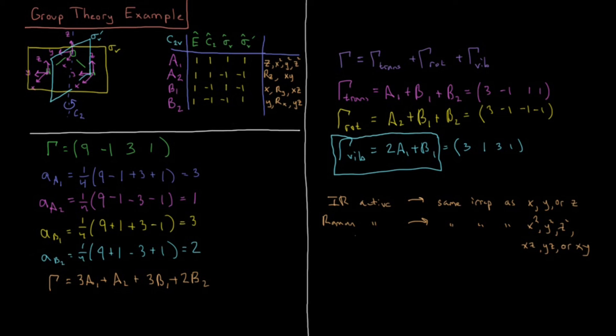So in this case, for our water molecule, what we have is A1 is the same as Z, B1 is the same as X. So we have all three normal modes are IR active. And for Raman, A1 is X squared, that is fine. B1 is XZ, so we have all three modes are Raman active.